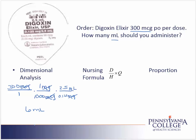Let's try the problem using the nursing formula. In the nursing formula, we start with the desired or doctor's order — in this case, that is 300 micrograms. We place that over what we have on hand. When I look at the label, I have 0.125 milligrams, which is in a quantity of 2.5 milliliters, so I'll fill in 2.5 as the quantity.